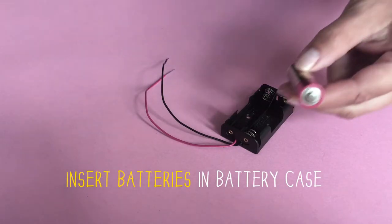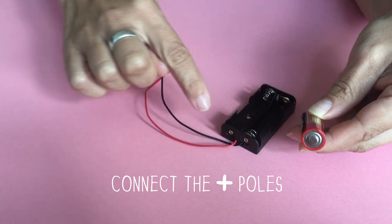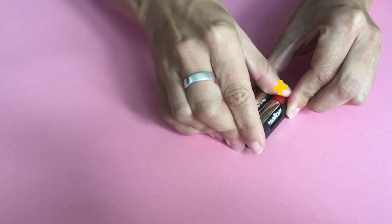First we insert the batteries in the battery case. Make sure to connect the plus pole of the battery to the plus side of the battery case, just like this.